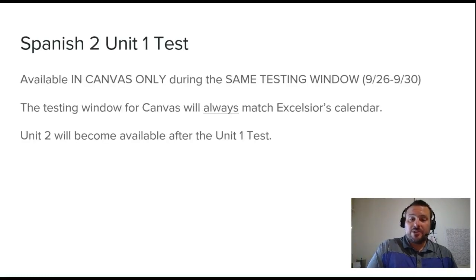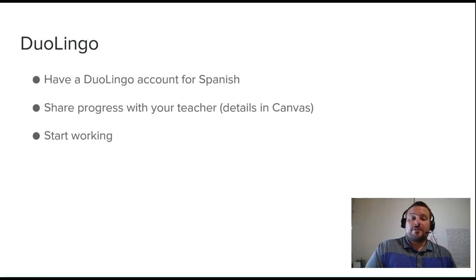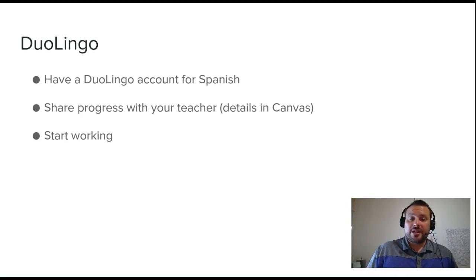And the Unit 1 test is next week. It's in Canvas, and it will be during the same testing window that we have on our student calendar. This is the 26th through the 30th of September — el 26 hasta el 30 de septiembre. A testing window for Canvas will always match the Excelsior calendar. And Unit 2 becomes available after Unit 1. For Duolingo, make sure that you've talked to your Spanish teacher if you'll be using Duolingo and share your progress. But always check with your Spanish teacher first.